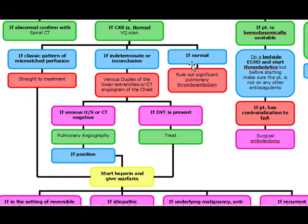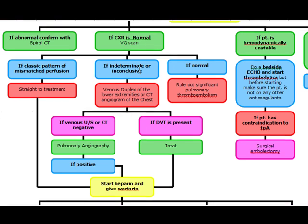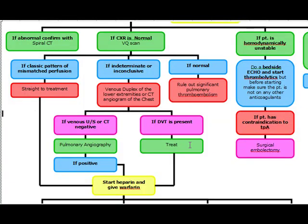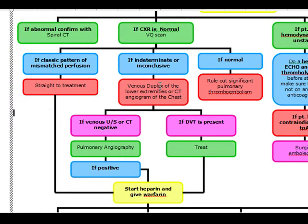If the VQ scan is indeterminate or inconclusive, this is where it gets a little tricky. You're going to do a venous duplex of the lower extremity or a CT angiogram of the chest. If the venous ultrasound or CT is negative, you're going to do a pulmonary angiography. But if you see a DVT on the venous duplex, you're going to go ahead and go straight to treatment.